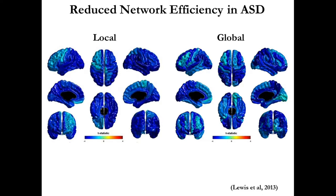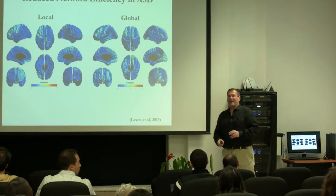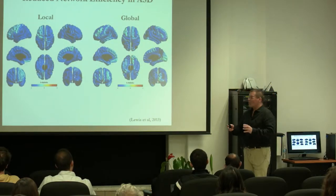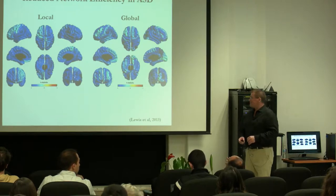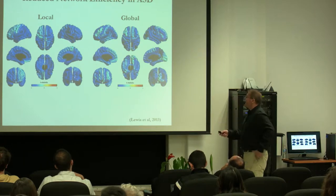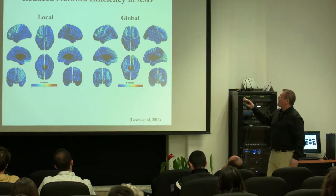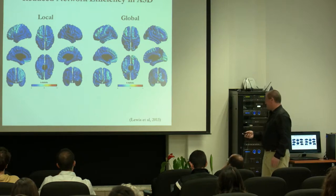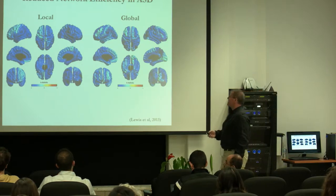Starting way downstream, panning for gold, here is a result: reduced network efficiency in ASD. This is akin to a number of results reporting abnormal connectivity or under-connectivity in autism. I'm going to start here and then try to unravel what I mean by network efficiency — that takes a little bit of detail.